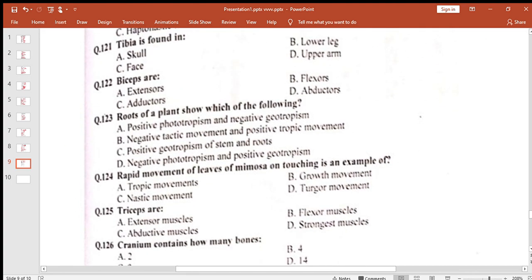Tibia is found in lower leg. Bicep, bicep we have flexor. Which of the following? They show negative phototropism and positive geotropism.